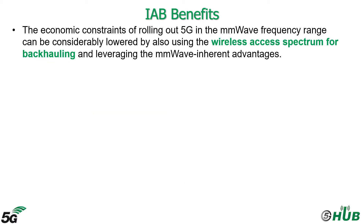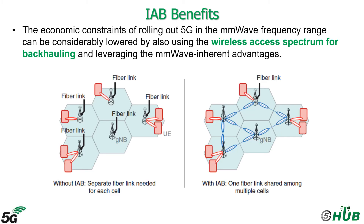The economic constraints of rolling out 5G in the mmWave frequency range can be considerably lowered by also using the wireless access spectrum for backhauling and leveraging the mmWave inherent advantages. One of the most significant benefits of IAB networks is reducing deployment costs compared to networks without IAB, by obviating the need to provide wired backhaul — fiber — to each cellular base station.